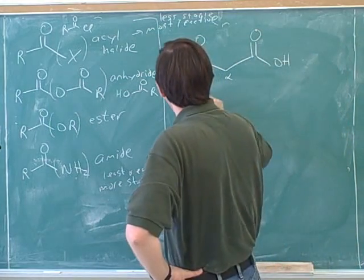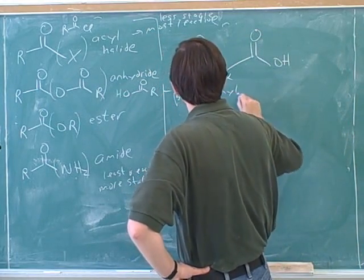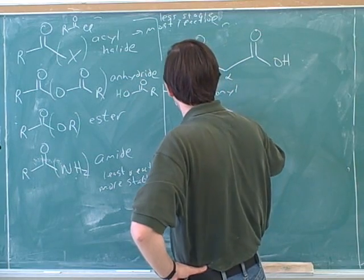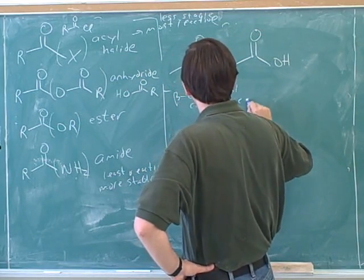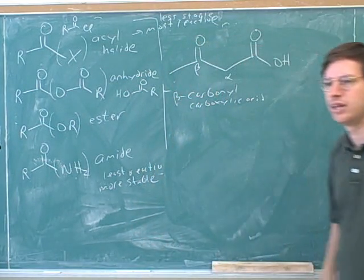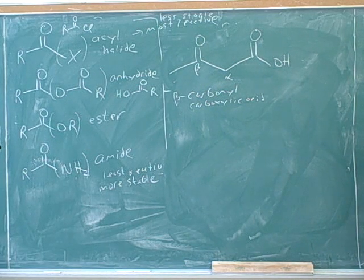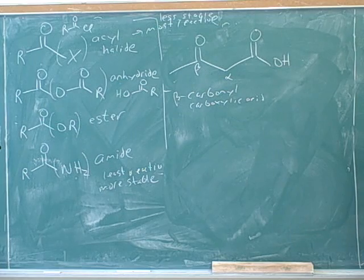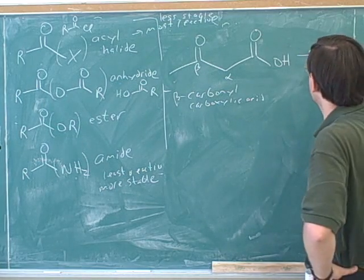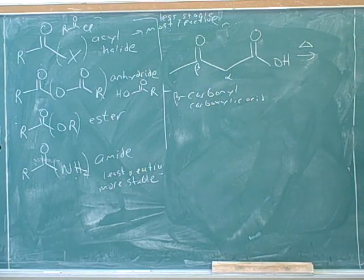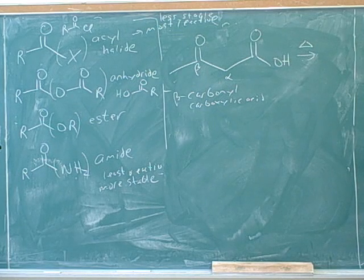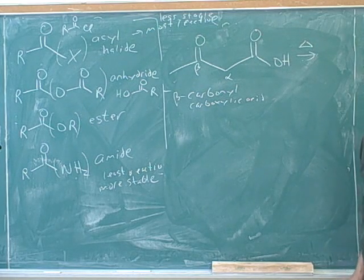So we could call this a beta carbonyl carboxylic acid. And the key point is that beta carbonyl carboxylic acids can decarboxylate under moderate heating. Under moderate heating, a beta carbonyl carboxylic acid will decarboxylate.